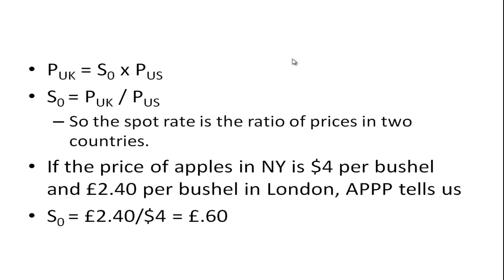The spot exchange rate is the ratio of prices in two countries. If the price of apples in New York is $4 per bushel and £2.40 per bushel in London, then absolute purchasing power parity tells us it's the ratio of these two, so £2.40 divided by 4 equals £0.60 per US dollar.